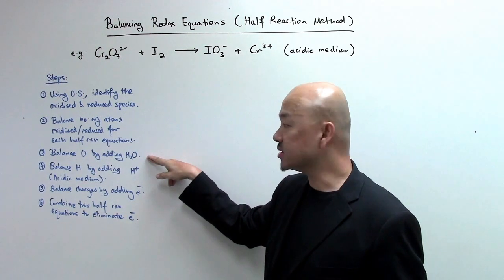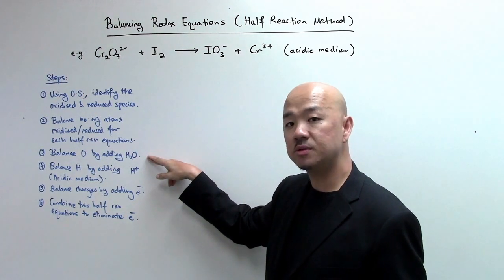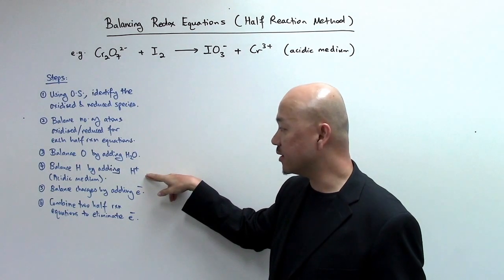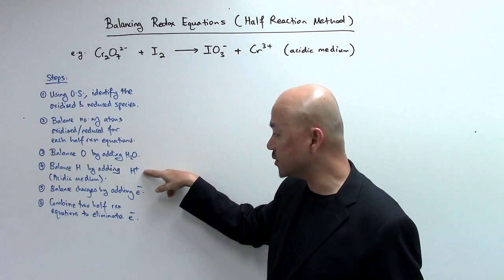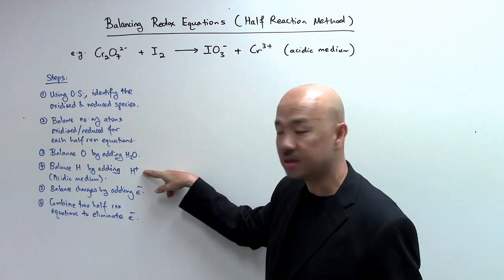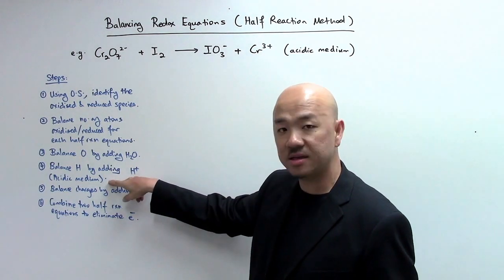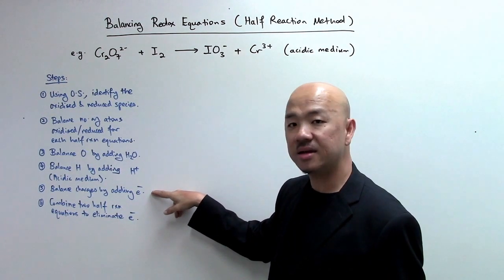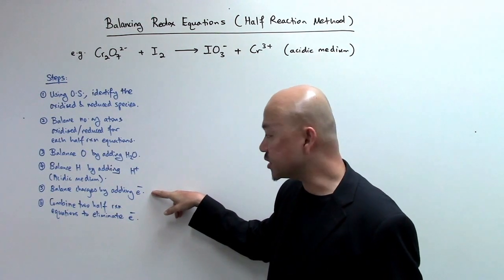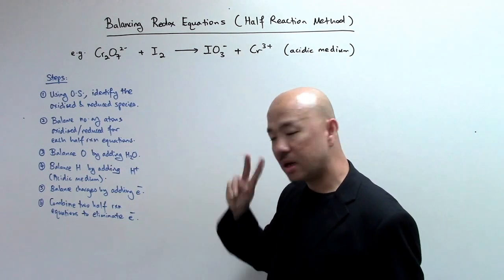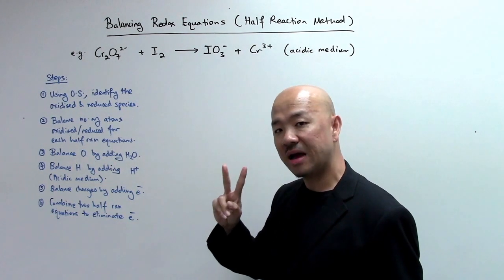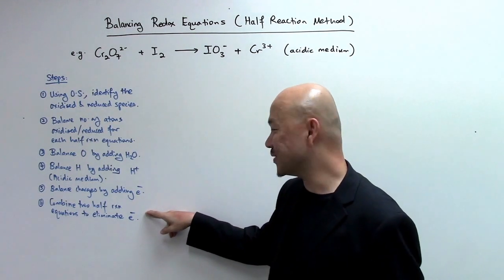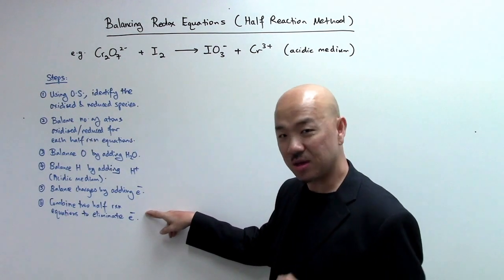Next, we're going to balance the oxygen atom by adding water molecules to it. Fourth, we're going to balance the hydrogen atom by adding H⁺ ions to it. Take note that H⁺ ions — when we add this — is because of acidic medium. Next, we're going to balance the charges by adding electrons to the half equation. Last but not least, once you have two of the half equations, we're going to combine the two half reaction equations to eliminate electrons.